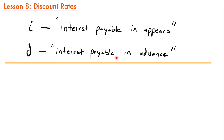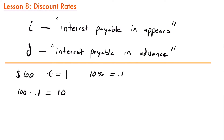The way a discount rate works: let's say I took out a loan of $100 for one year (t = 1) with a discount rate of 10%, or 0.1. Rather than getting that $100 right away, I'm actually charged 10% at the beginning. So $100 times 10% equals $10. Although I took out a loan of $100, I had to pay $10 of it right away, leaving me with only $90.